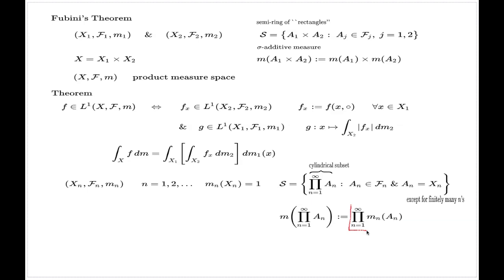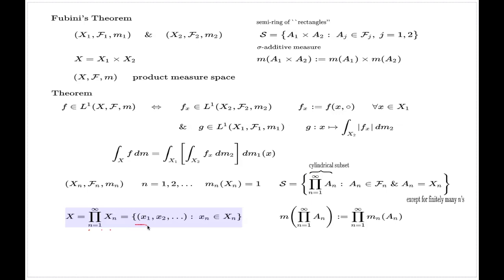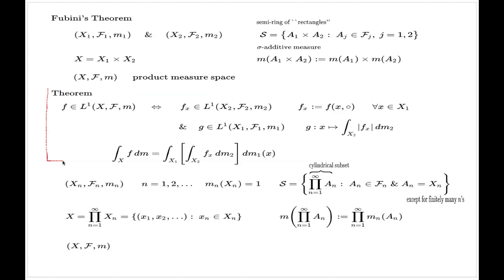You can define a measure for every cylindrical set. Although the symbol here represents an infinite product, in fact every factor except for finitely many ones will be unity, which renders this product a finite product. This will be a σ-additive measure. You can do the Lebesgue extension to the universal set X, which is the product of all X_n's — just a collection of all sequences where the first element comes from X1, the second from X2, and so on. That gives the product measure space involving infinitely many original measure spaces. You can also state Fubini's theorem in this case as well.